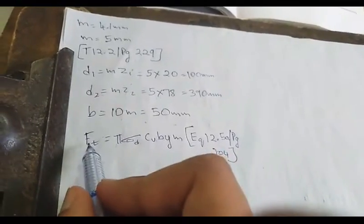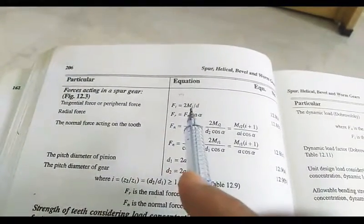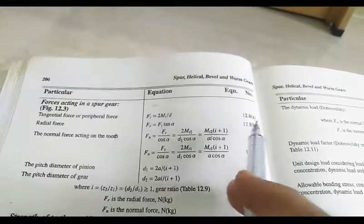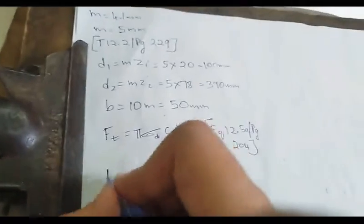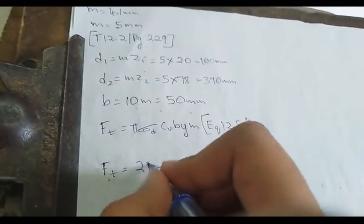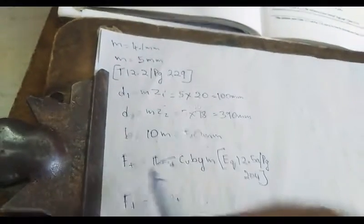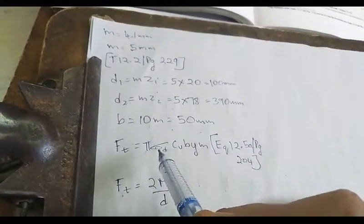In this equation we will find the value of ft by using another equation. Tangential force ft in terms of torque: ft = 2Mt / d. This is from equation 12.8a, page number 206. We use this equation because we will find all values and check for σd.